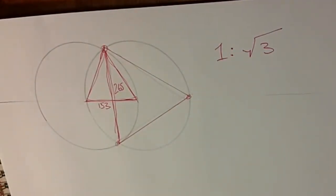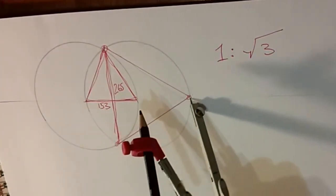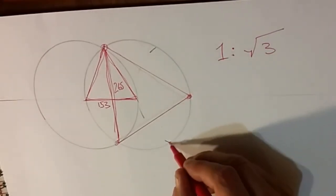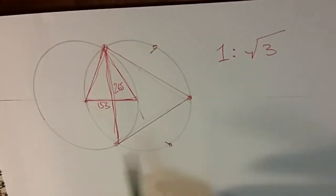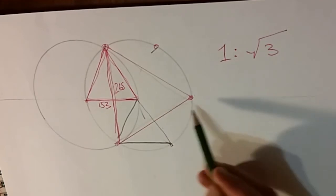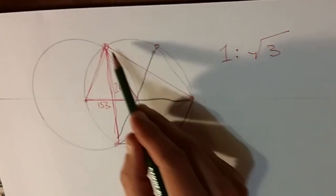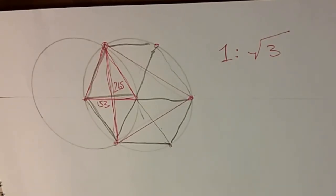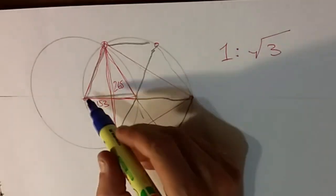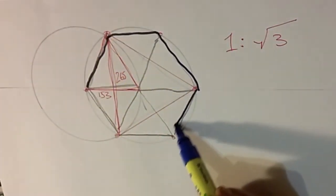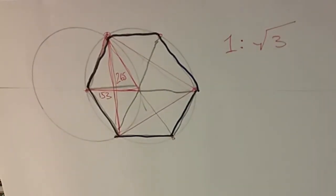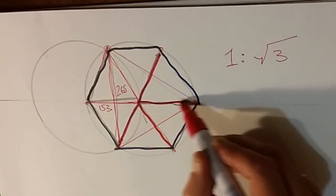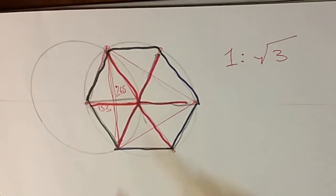How do we prove this triangle is equilateral without changing the size? One method is: if we draw in another arc, we get 1, 2, 3, 4, 5, 6 points. We create the perfect hexagon of 6 equilateral triangles.